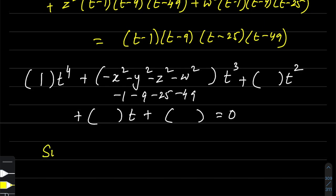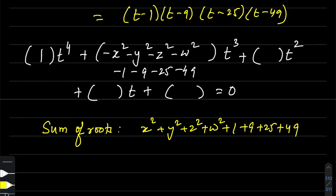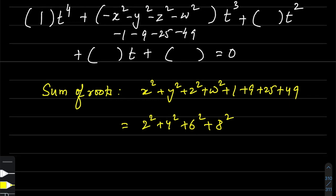Looking at the left side, we get -x², -y², -z², -w². On the right side we get -1 - 9 - 25 - 49. This is our coefficient of t³. So x² + y² + z² + w² + 1 + 9 + 25 + 49 equals the sum of roots.